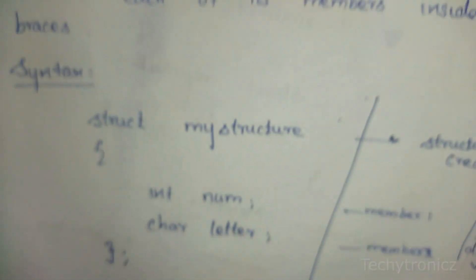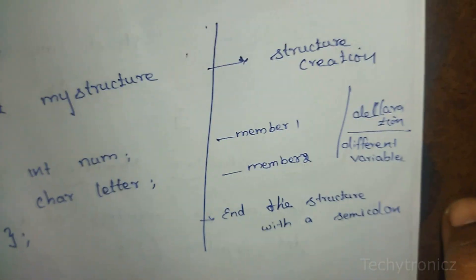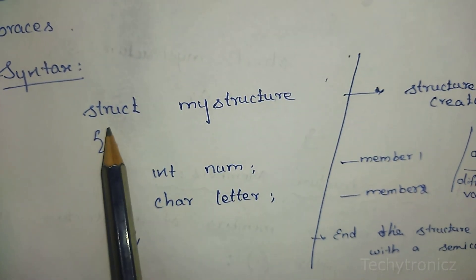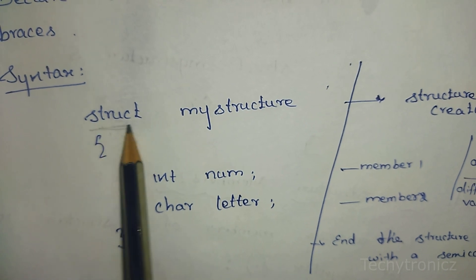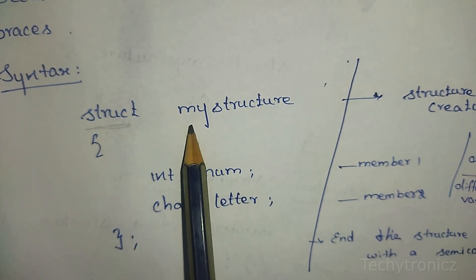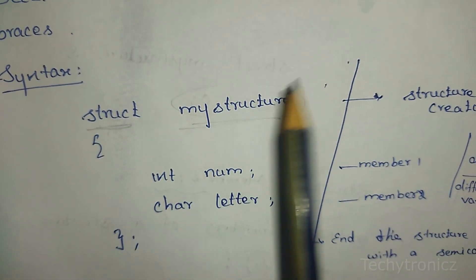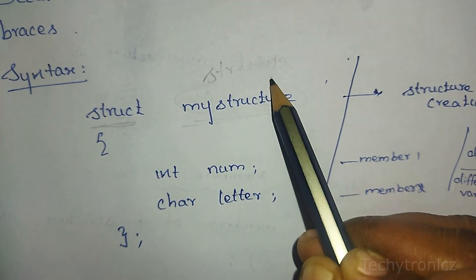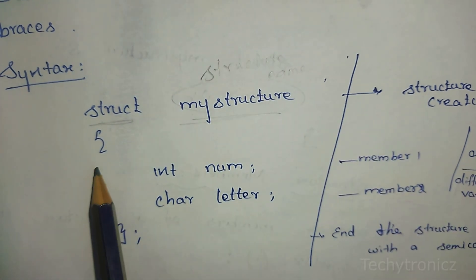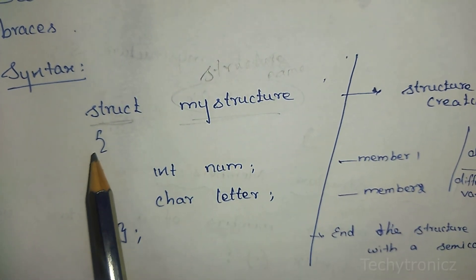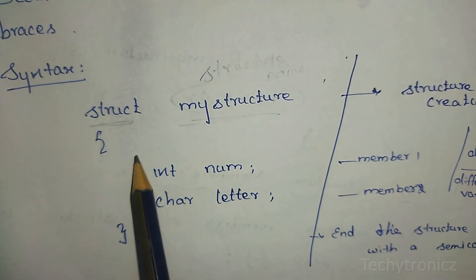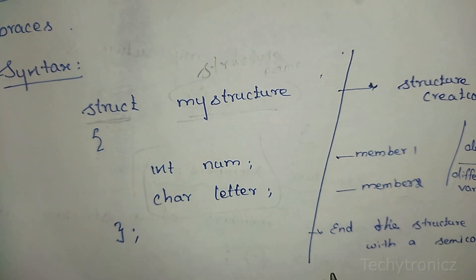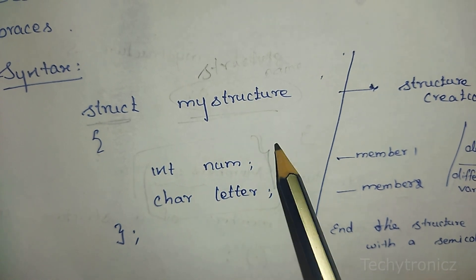The syntax to create a structure is: struct keyword, then the structure name — for example, 'mystruct' — followed by open curly braces where we declare different types of data members.